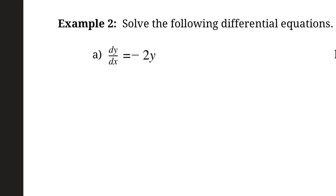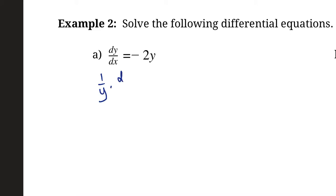Now this next question might look simple, but it's a little more complicated. If we try to just take the integral of both sides, it's not going to be as easy, because our integral has to be taken with respect to x — and there is no x on the other side. One way of visualizing this differently is to rearrange it: divide both sides by y to get one-over-y times dy/dx equals negative 2.